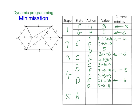Finally we're at our stage 5, and we've got A. Three actions: we can go B, C, or D. B is 4, C is 2, D is 1. From B my minimum is 8, so I can add that on — that gives me 12. From C my minimum is 6, so that gives me 8. And from D my minimum is 6, so I can add that 1, which gives me 7. So from A, my minimum weight to H has got to be 7.